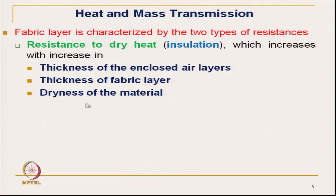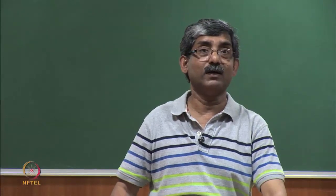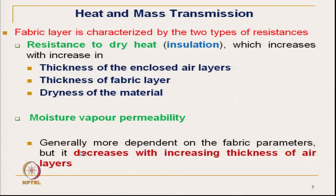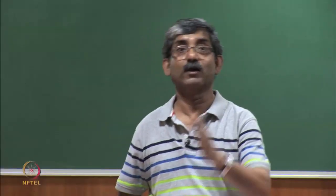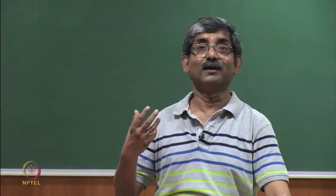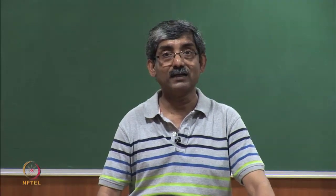Dryness of the material also affects insulation: wet material loses its insulation, so its conductivity is more. Dryness of material is directly related with dry heat insulation. Coming to moisture vapour transmission, it is generally more dependent on fabric parameters, but it decreases with increase in thickness of the air layer. That means the moisture vapour permeability for thicker fabric will be less. If the micro pores are larger in size, diffusion will be slower. This decreases with the increase in thickness of the air layer.